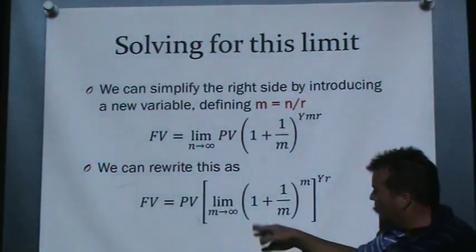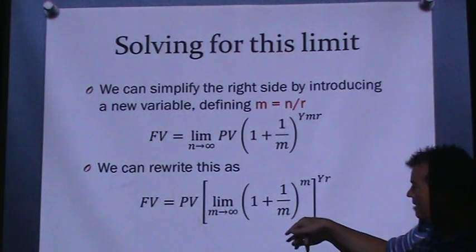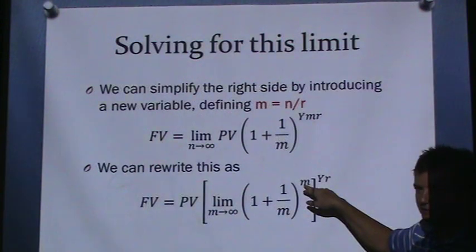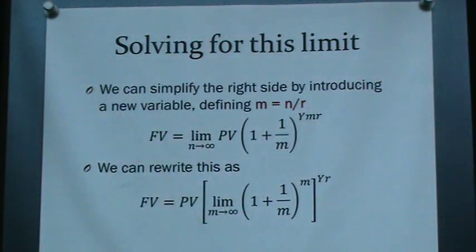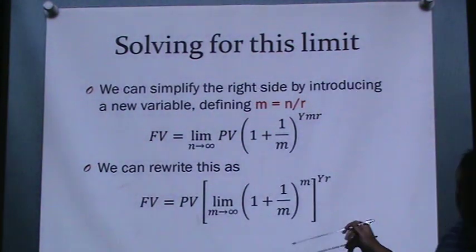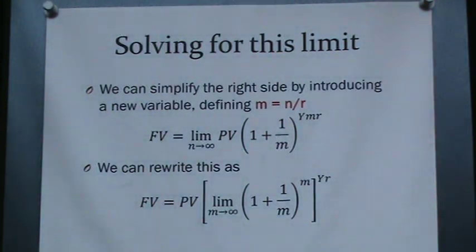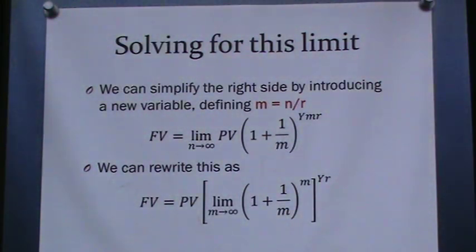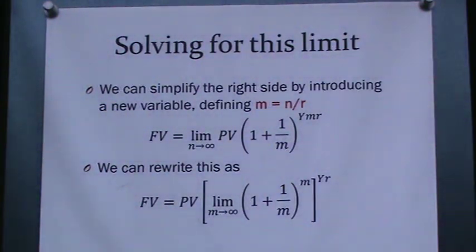This limit ends up being the number e. One student recognizes it from studying for an actuarial exam. This is the limit as x goes to infinity of (1 plus 1 over x) raised to the x, which calculates out to a specific constant. Before computers, this was very difficult to calculate.